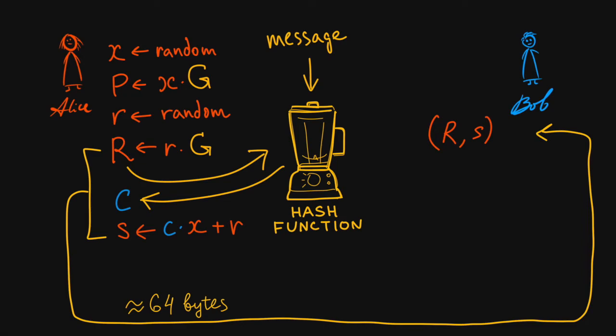When Bob receives the signature, he puts R and his message into a hash, computes the same challenge, and verifies the signature equation. If the equation holds, Alice's signature is valid.